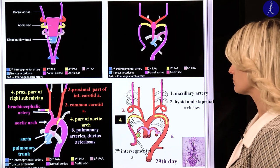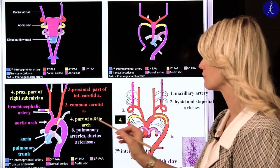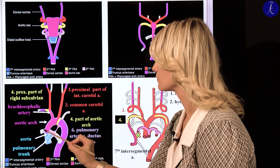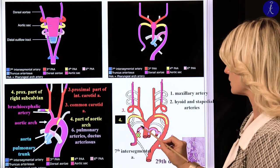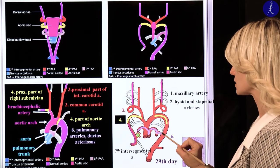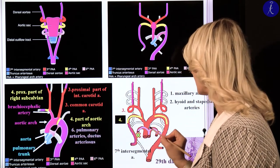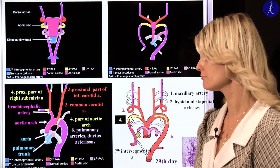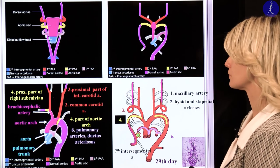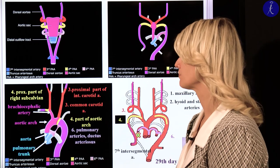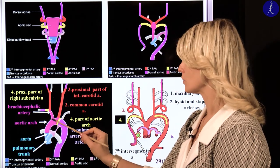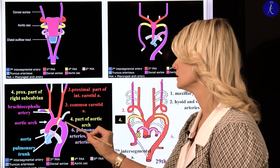From the sixth arch will be the truncus pulmonalis, the pulmonary trunk, and from this will develop the pulmonary arteries. On the right side there is no persistent connection, but on the left side we have a connection between the pulmonary trunk and the aorta — this has a really important function during embryological life. This connection is the ductus arteriosus, which will become the ligamentum arteriosum after it closes at birth. Because we have no circulation in the lung during embryological life, the arterial blood goes from the pulmonary trunk directly to the aorta.